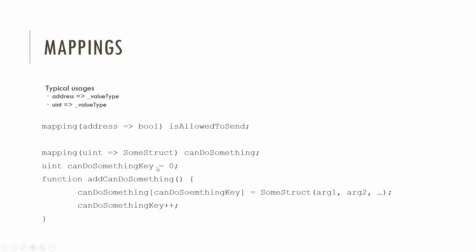You would have a counter that is the key to this canDoSomething mapping, starting at zero. Then you would add to the canDoSomething mapping. Because everything is initialized, you don't need any new keywords or initialization — it's done by default. When the key is initially zero, you go to the zero element, the first element of the canDoSomething mapping, and set it with the struct arguments. Then you simply increase the canDoSomething key. At the end, the canDoSomething key represents the length of the canDoSomething mapping.